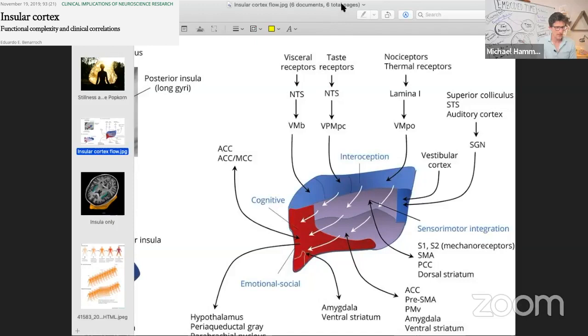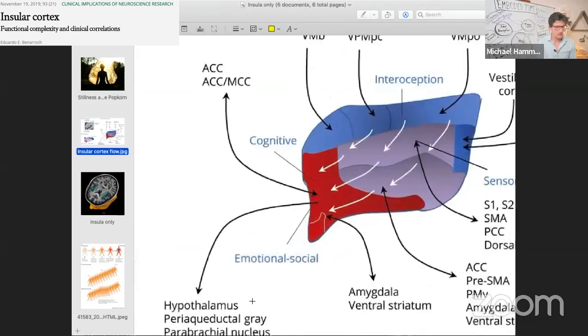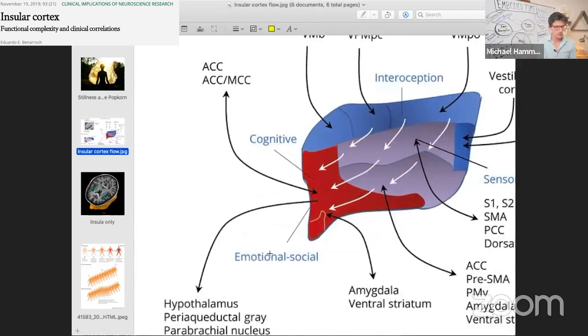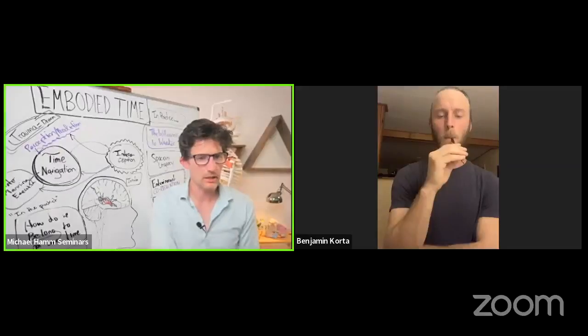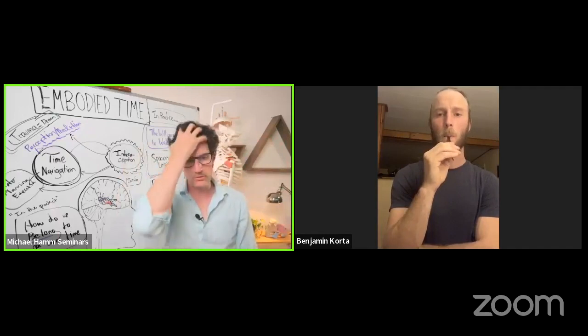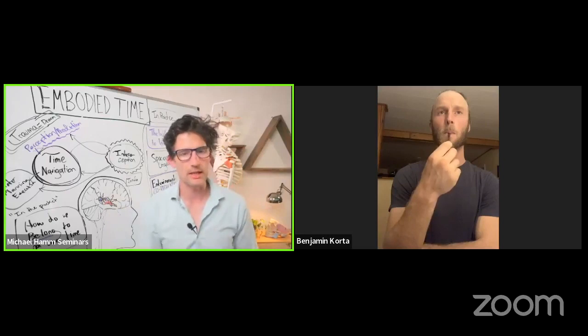By the time you get to the end of this flow, your brain knows what kind of situation it's in and what kind of stress hormones it should dump. Your brain knows what it should be focusing on perceptually, how to update the narrative of self, and how to widen or narrow the perceptual lens in the moment. The insula is doing all of this for us many times a second.